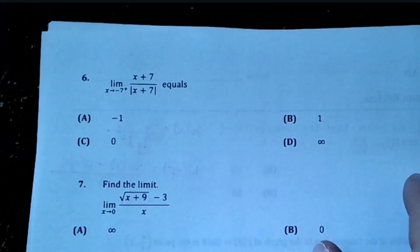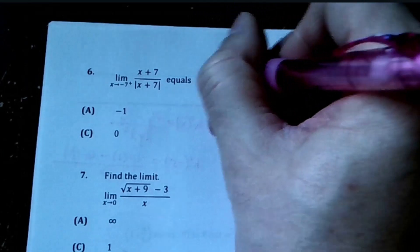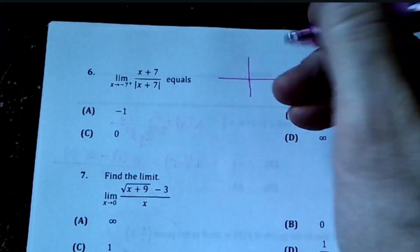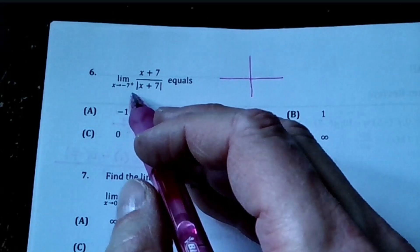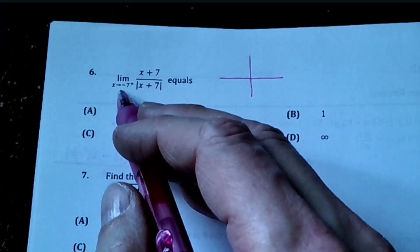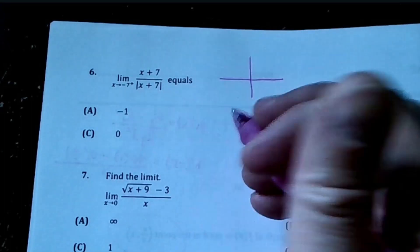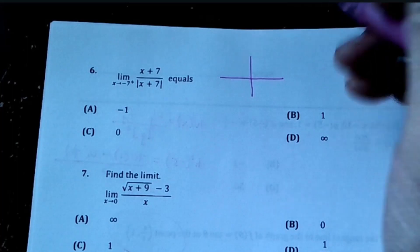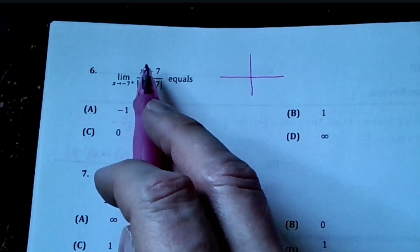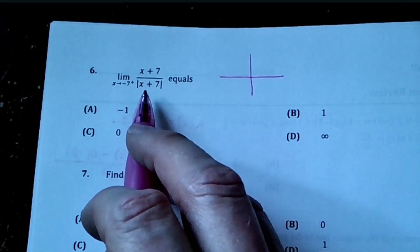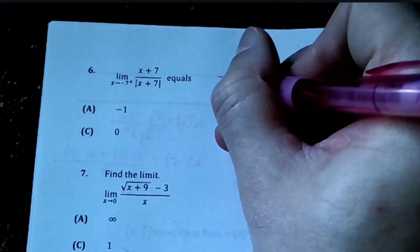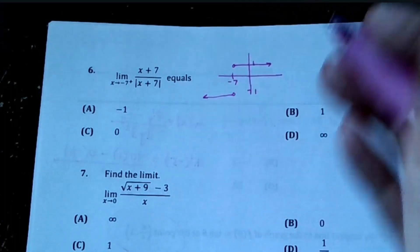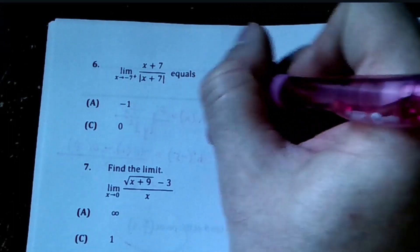Now this guy is kind of annoying because of that absolute value function. We know it's 1, but we've got two different versions. If I plugged in -7, I'd get 0/0 which can't happen. If I plugged in -8, this guy would become negative and the absolute value would make it positive. The thing is, -7 is the boundary here.